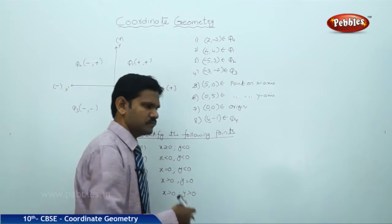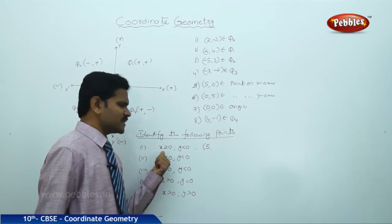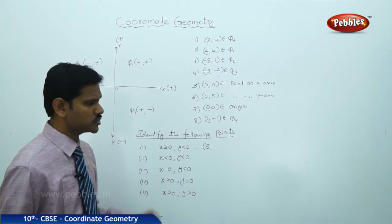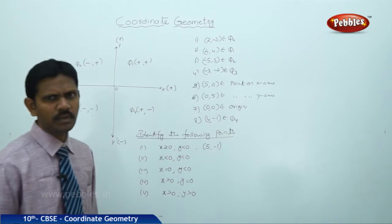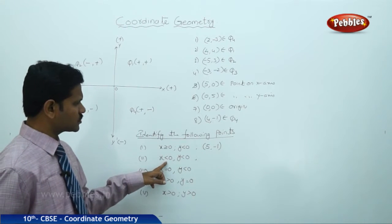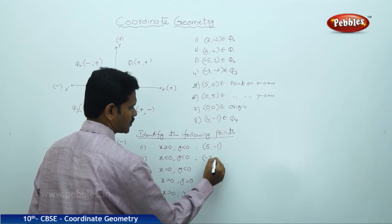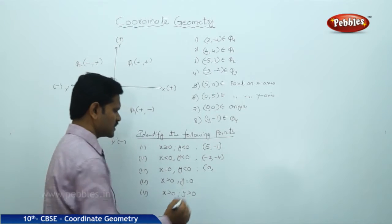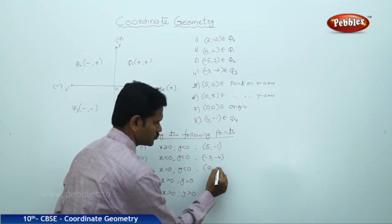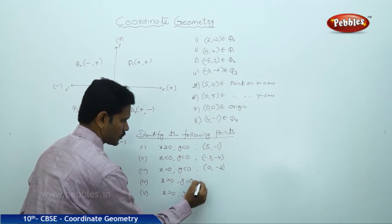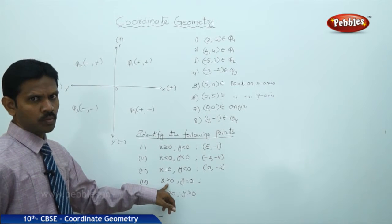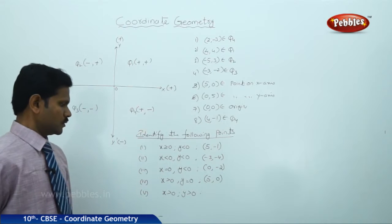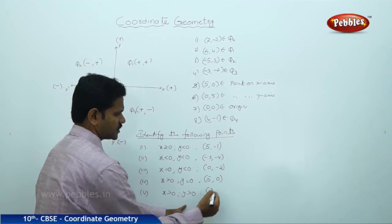Let us observe these. x greater than or equal to 0 means some positive number for x; y less than 0 means y is negative — take any negative number. For the second: x < 0 and y < 0, for example (−3, −4) — take any negative numbers. For the third: x = 0 and y < 0, for example (0, −2). For the fourth: x > 0 and y = 0, for example (5, 0). For the fifth: x > 0 and y > 0, for example (7, 8).